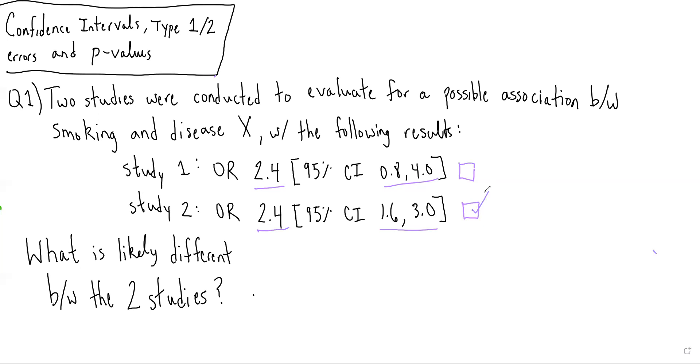And we're basically asked to interpret, even though they got the same point estimate, why did study two have a narrower confidence interval allowing statistical significance to be achieved? And if we recall, for a confidence interval, we have the point estimate plus or minus standard error times 1.96.